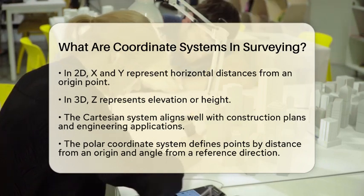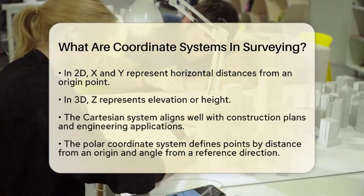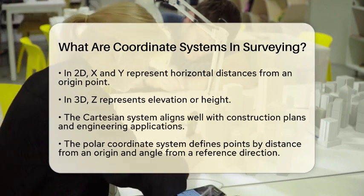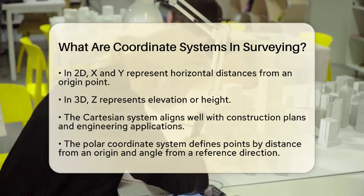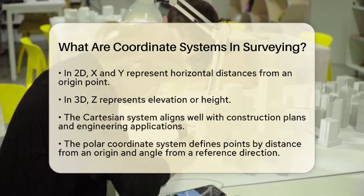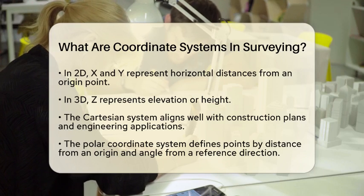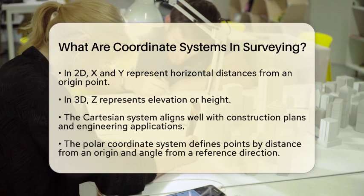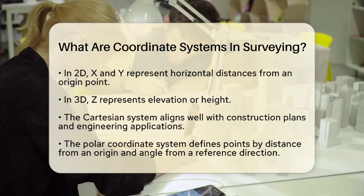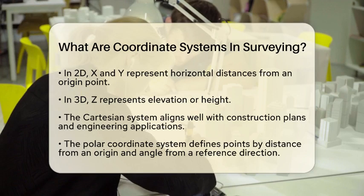Another important system is the polar coordinate system. This system defines a point by its distance from a fixed origin and the angle from a reference direction. It is particularly useful in certain surveying calculations, especially when measuring angles and distances directly in the field.